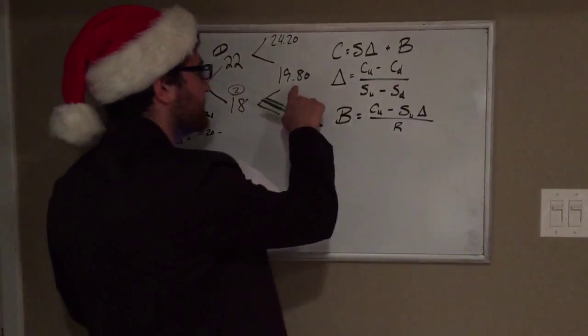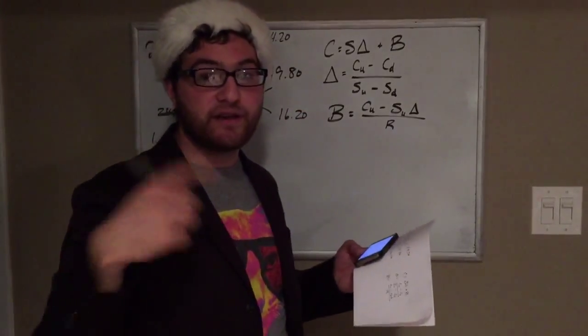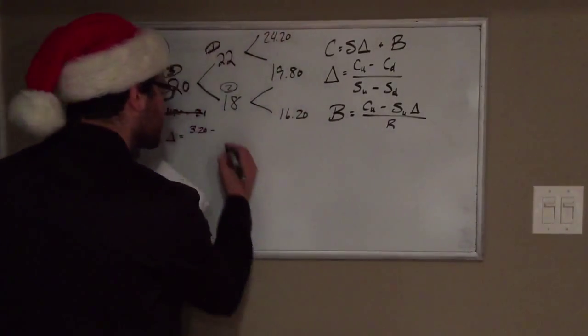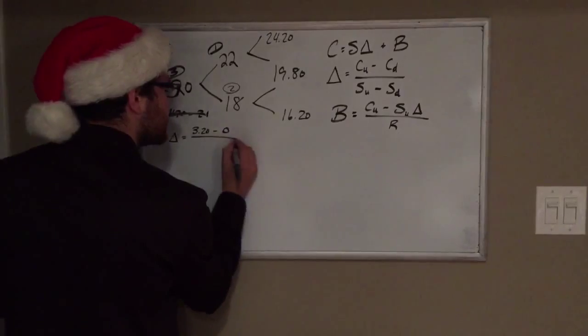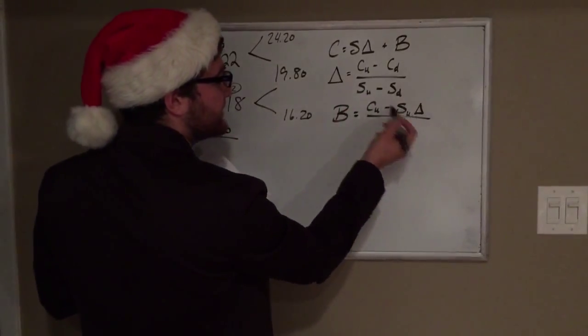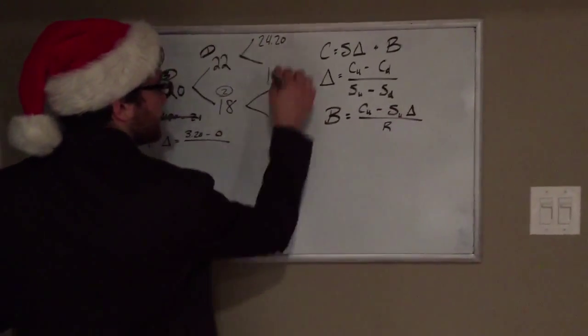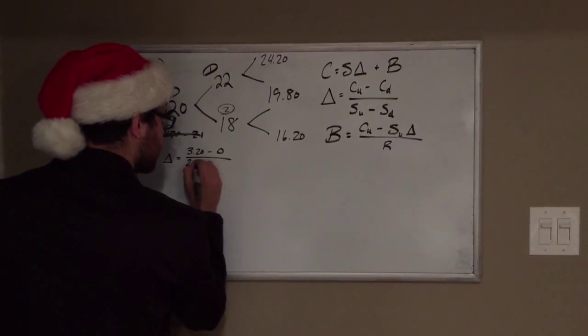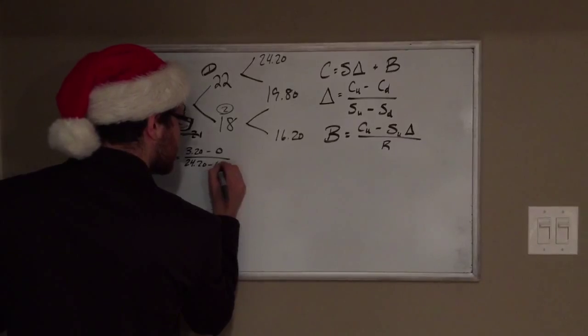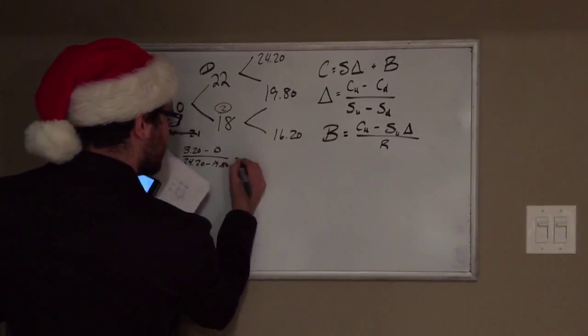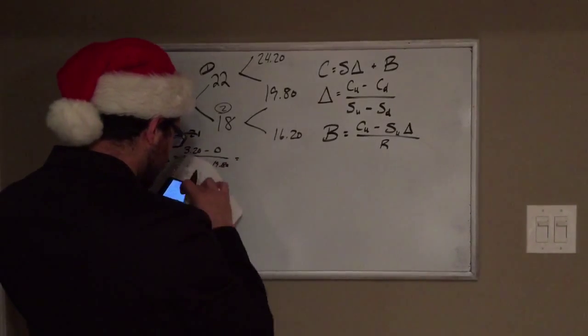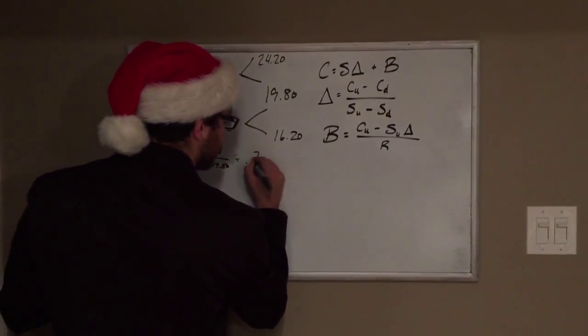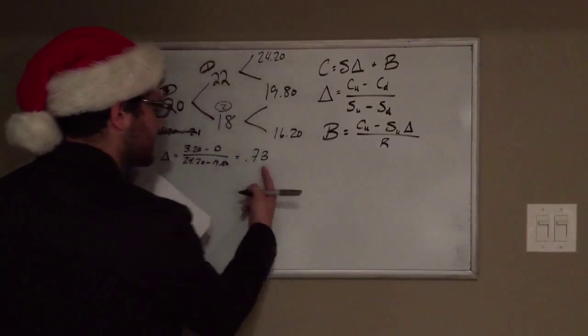And then if it goes down, it'll be 19.8, which is under the strike price, so our payout is going to be zero. So the price of that call is going to be 3.20 minus zero all over the stock price if it goes up minus the stock price if it goes down - so just the 24.2 minus the 19.8. If we calculate this out, we get 0.73. So that'll be the hedge for the first one.